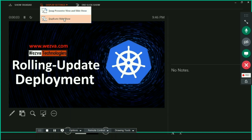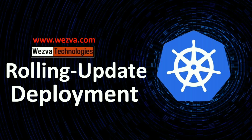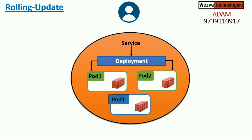The next type is rolling update, which is the default method Kubernetes provides. In a rolling update, replacements happen one by one. For example, if you have a web application with two replicas and you want to deploy a new build, you first create a new container or pod with the new build. Once the new pod is successfully up, you remove the corresponding old replica.